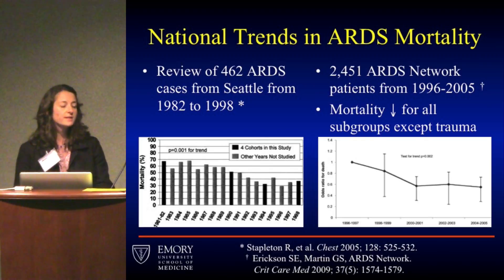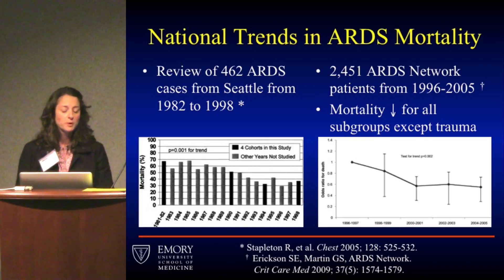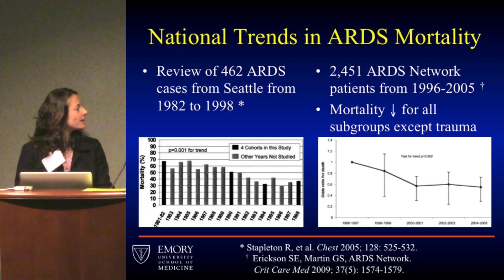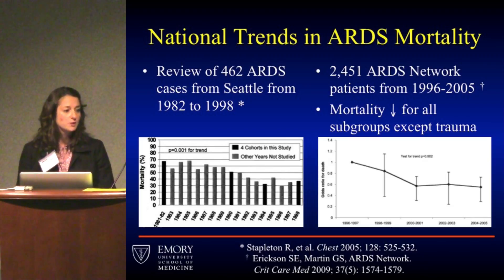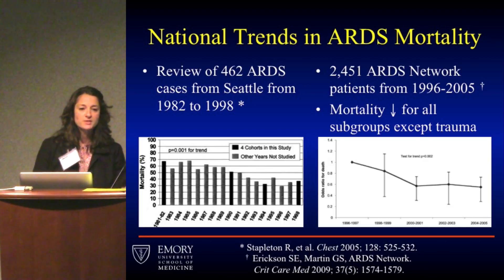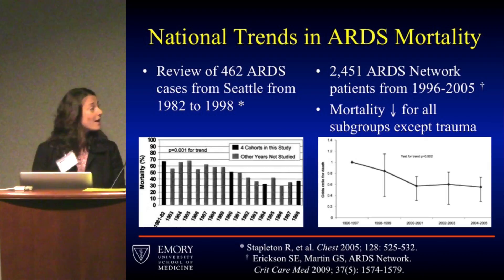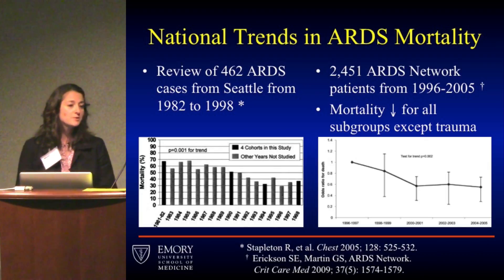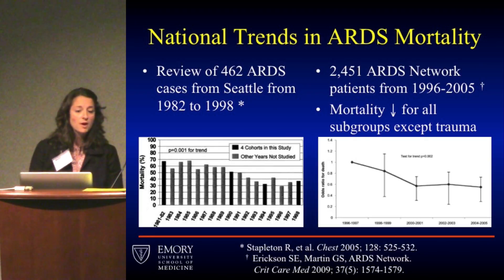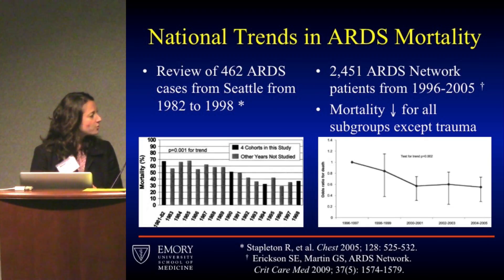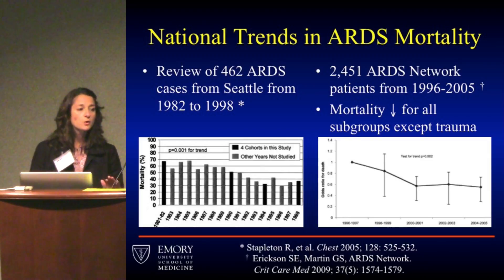Mortality for ARDS can vary between about 25% and 40%. A retrospective study of cases from 1982 to 1998 found a trend of decreased mortality over time. A subsequent retrospective study of about 2,000 ARDS patients enrolled in ARDSnet trials showed a trend of decreased mortality across all groups except the subgroup of patients with trauma, suggesting that interventions like low tidal volume ventilation and higher PEEP have contributed to improved outcomes.